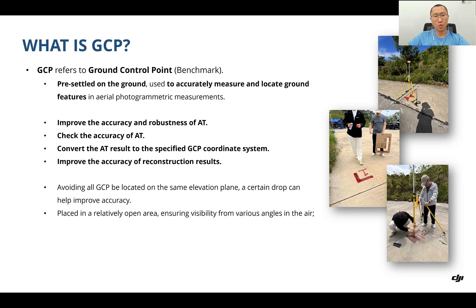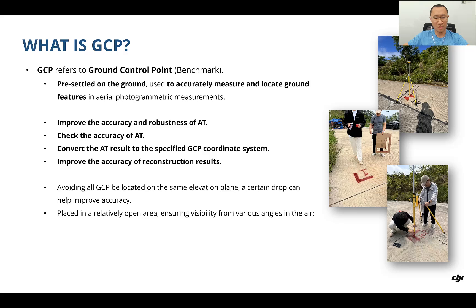First question: what is GCP? GCP refers to Ground Control Point — someone might call it the benchmark. It is pre-settled on the ground and used to accurately measure and locate ground features in aerial photogrammetry measurements. It can improve the accuracy and robustness of aerial translation, check the accuracy of aerial translation, and convert the aerial translation results to the specific GCP coordinate systems.